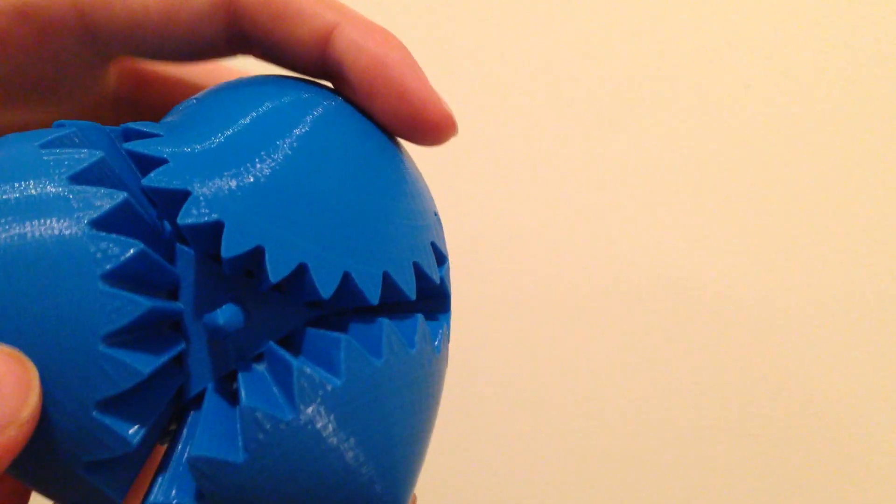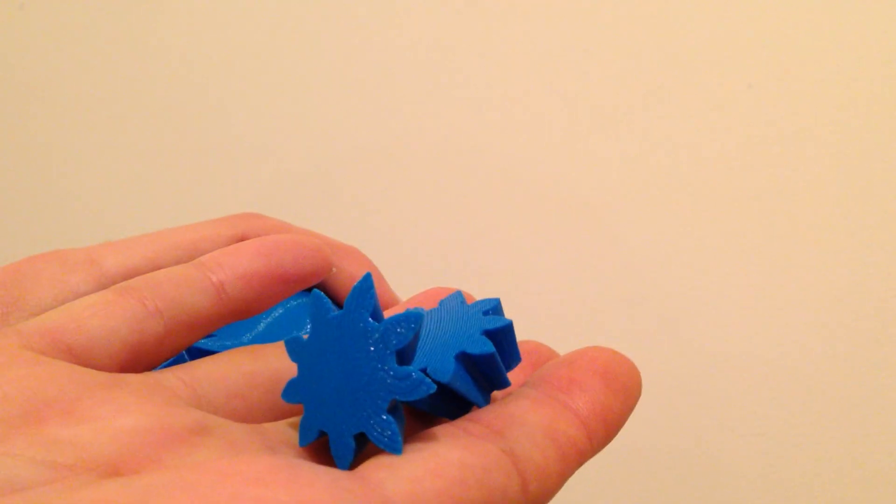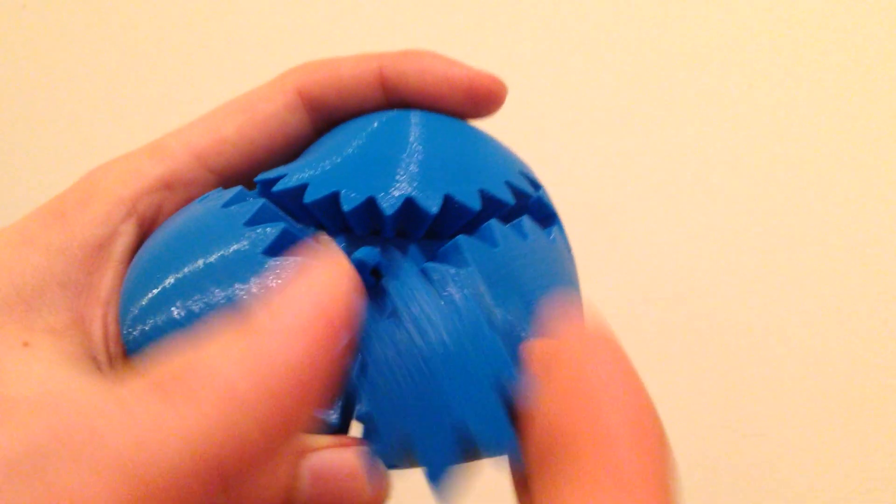And now we're just down to these last two little gears, which again, are tricky because they look like they're the same. But really, they're mirror images of each other. And it can be a little bit tricky to figure out which one goes where.